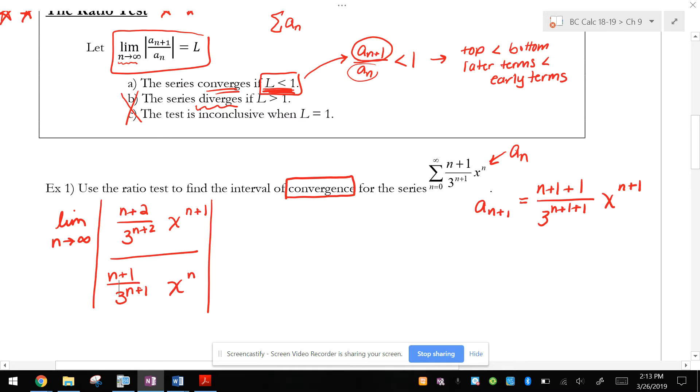I don't know why that video just cut off, but we're going to have to cope with it. So I got to the point where I set up a sub n plus 1 over a sub n. And what I was about to say before I was rudely interrupted by my computer is that we want the interval of convergence.